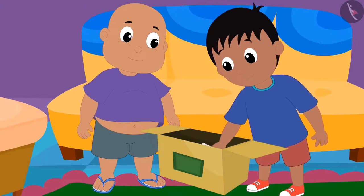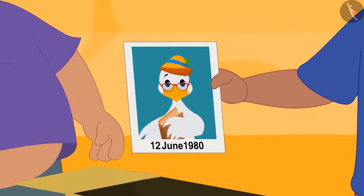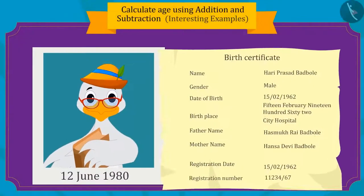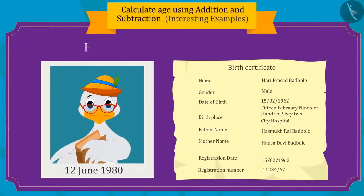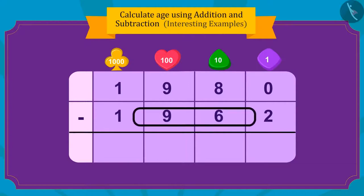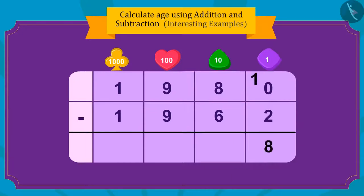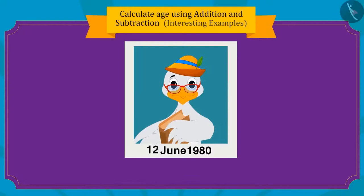Raju found another picture of Uncle in his college. The date written below the college picture is 12th June, 1980. Can you tell how old Uncle was in that picture? If we subtract 1962 from 1980, we can find Uncle's age. Uncle's age in this picture is 18 years.